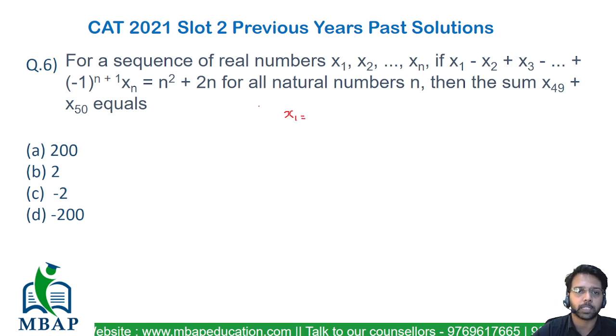So the question using this expression x1 will be what? The value of n you will substitute to be as 1 itself. So it's going to become 1 square plus 2 times 1 which will become 3.